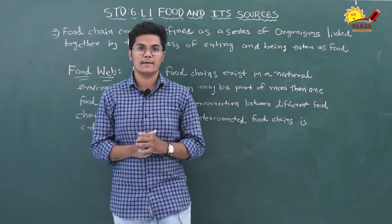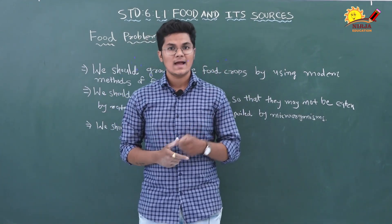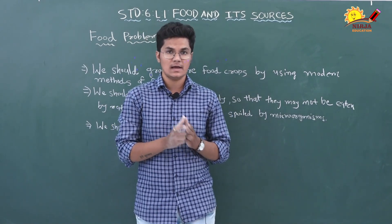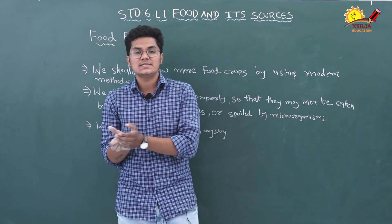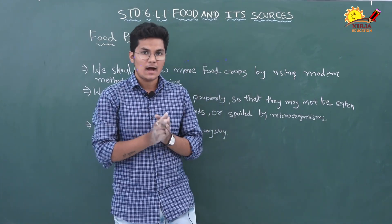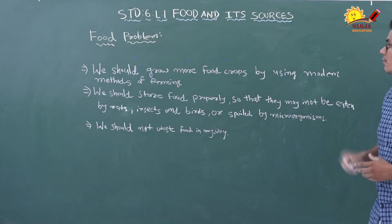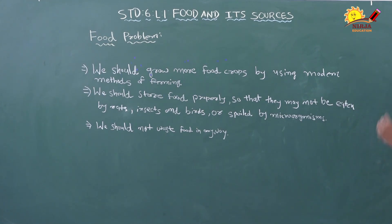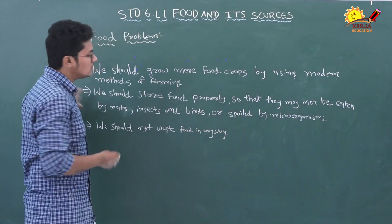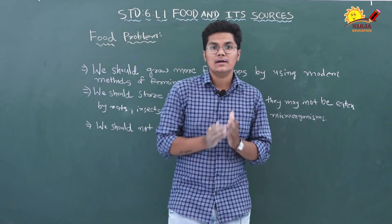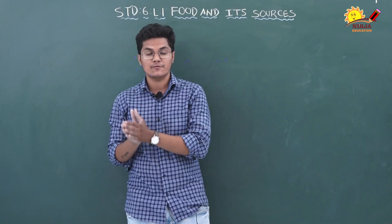Many people in India are suffering from food problems. There are two main reasons: first, there is a shortage of food, and second, people cannot buy food because of poverty. In some parts of the world people are overeating and suffering from obesity, while in other parts people suffer from malnutrition. To prevent this, we should grow more food crops using modern methods of farming, store food properly so it is not eaten by rats, insects, birds, or spoiled by microorganisms, and we should not waste food.